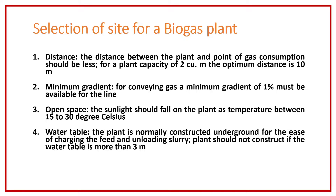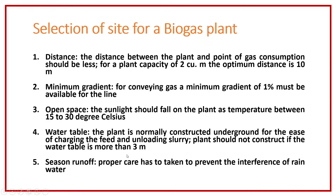If there is a high water table level, there may be chances that in the rainy season the water table can interfere or come in contact with the digester, and water can come inside the digester. That will affect the working environment of the biogas digester and it may not work properly, so it is not suitable to construct a biogas plant if the water table is more than 3 meters.